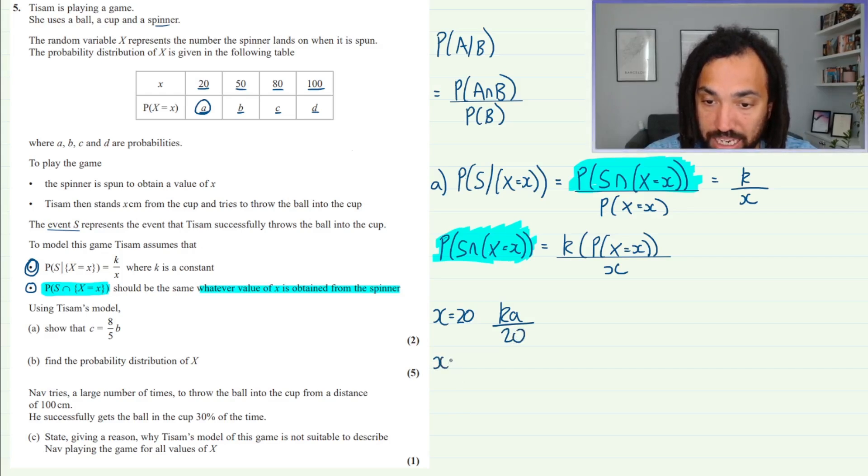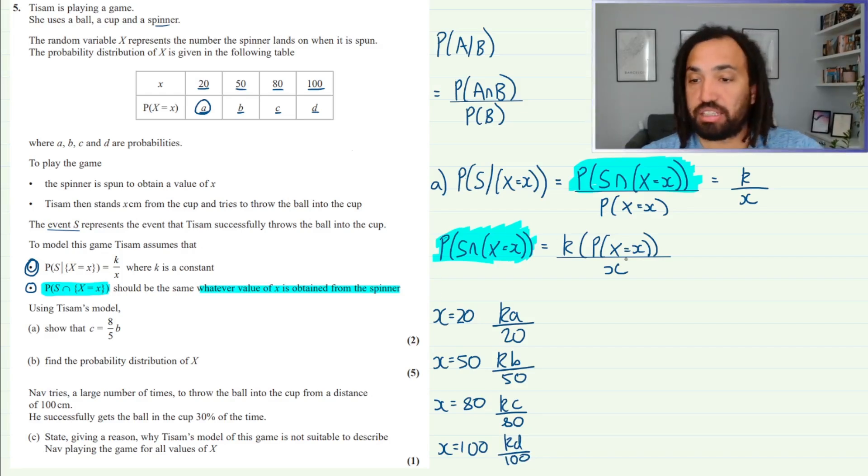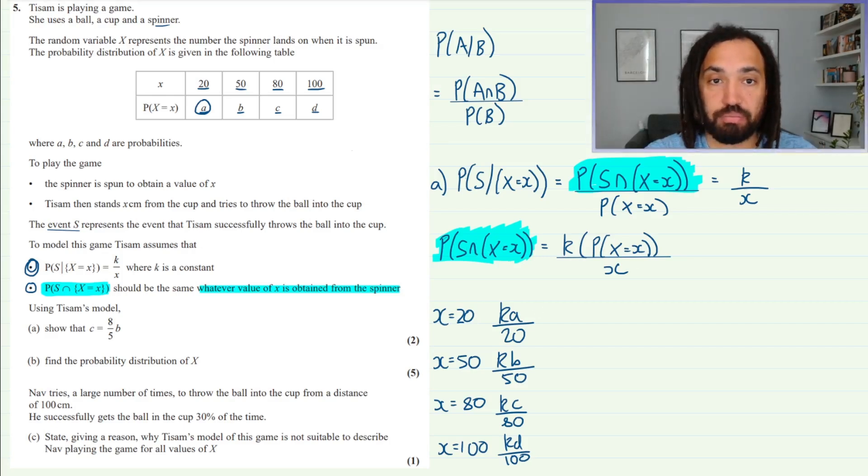What happens when X equals 50? What happens to the right-hand side of this equation here? Well we get K, the probability that X equals X is B, and that's all over 50 this time. And then when X equals 80 we're going to get KC over 80, and when X equals 100 we're going to get KD over 100. So whatever value of X we substitute into this equation, this left-hand side is going to be exactly the same, and the right-hand side is going to be either this one, this one, this one, or this one depending on which value of X we sub in.